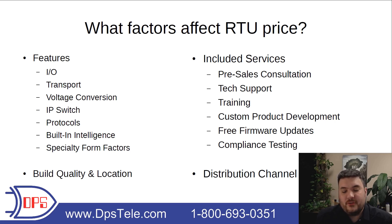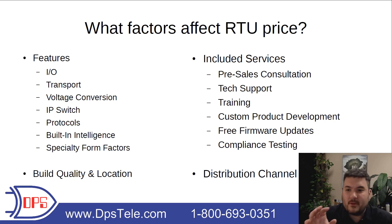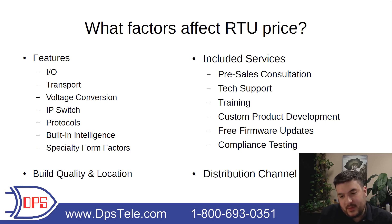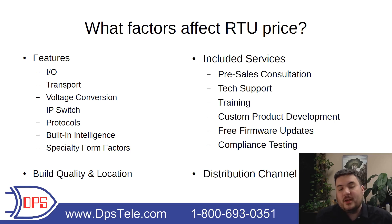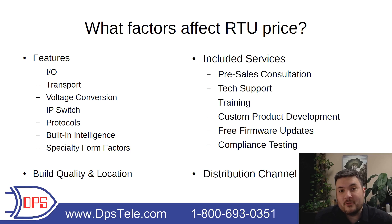And then finally, you get to distribution channel — perhaps underappreciated. If you're buying a remote that goes from manufacturer through a large regional distributor to a more local distributor and then to you, each stage along the chain takes out a little profit to stay in business. If you can collapse that channel and find a manufacturer where you can buy direct, that can create real savings because you don't have all those middlemen in the way.